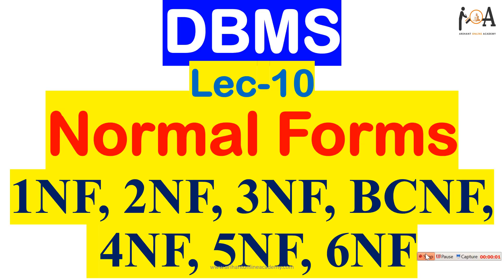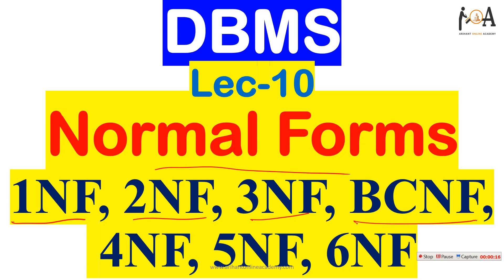Welcome to Arihant Online Academy. In this video lecture we will learn about normal forms. There are several normal forms currently used in database management systems: 1NF, 2NF, 3NF, BCNF, 4NF, 5NF, and 6NF. We will discuss each normal form in detail, find their significance, why they are used, and how to convert from one to another.